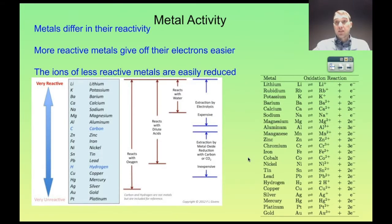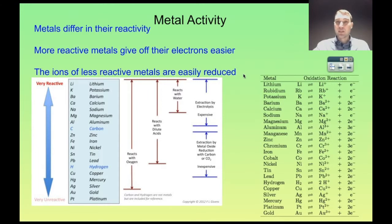So metals differ in their activity. A very reactive metal loses electrons very easily — a metal loses electrons by definition. So a metal that loses electrons very easily is very reactive. The ions of a metal that are easily reduced — that happens when a metal is not very reactive. So the less reactive a metal, its ions are very easily reduced by gaining electrons. And we end up with these activity series here.